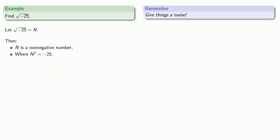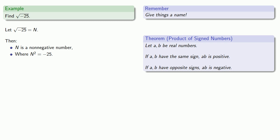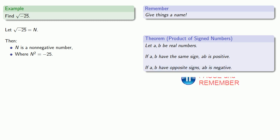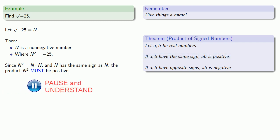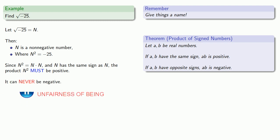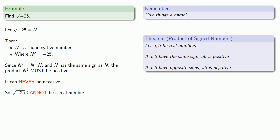Let's think about that. We should remember our rules for operating with signed numbers: if a and b are real numbers and they have the same sign, their product will be positive, but if they have opposite signs, their product will be negative. Since n squared equals n times n, and n has the same sign as n, the product n squared is the product of two numbers with the same sign, so it must be positive — meaning it can never be negative. Therefore, n squared equals minus 25 can't possibly be true for any real number, and so the square root of minus 25 cannot be a real number.